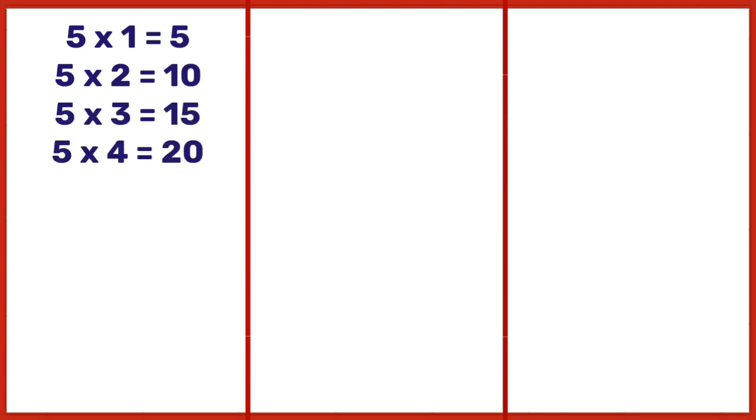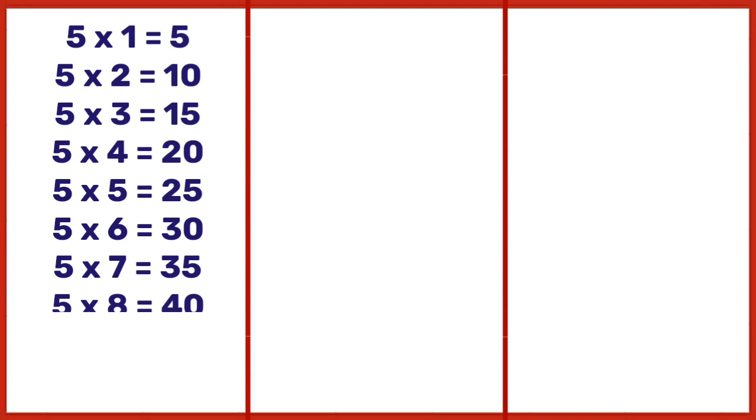5 ones are 5, 5 twos are 10, 5 threes are 15, 5 fours are 20, 5 fives are 25, 5 sixes are 30, 5 sevens are 35, 5 eights are 40, 5 nines are 45, 5 tens are 50.